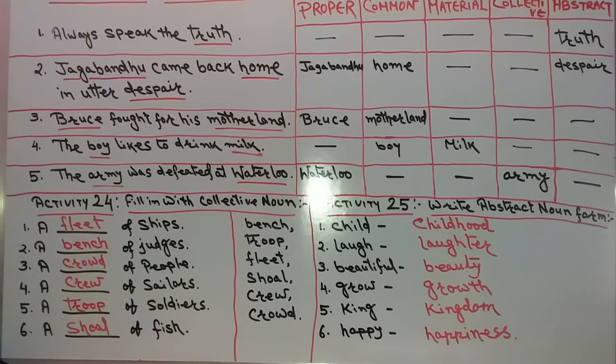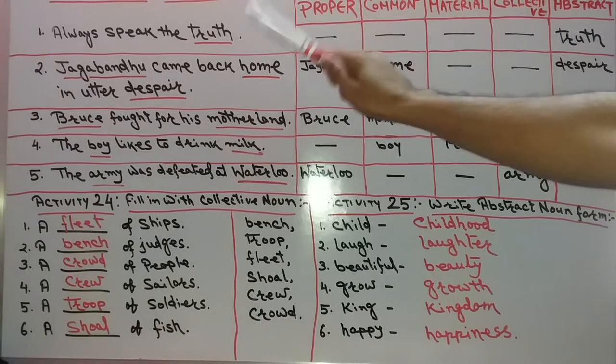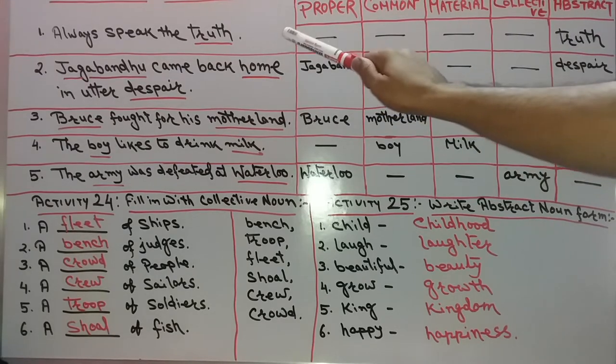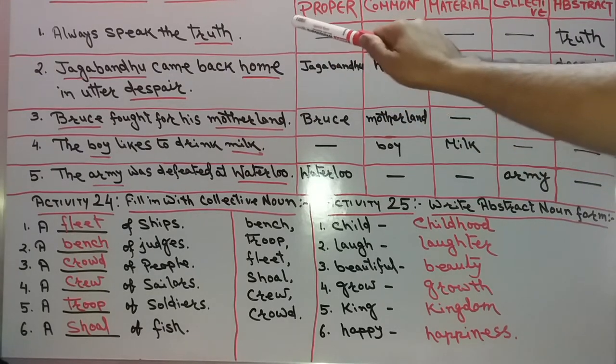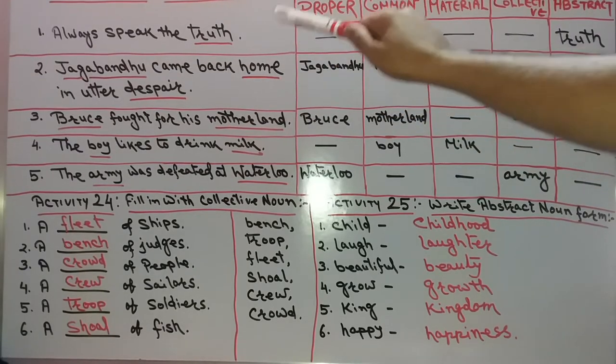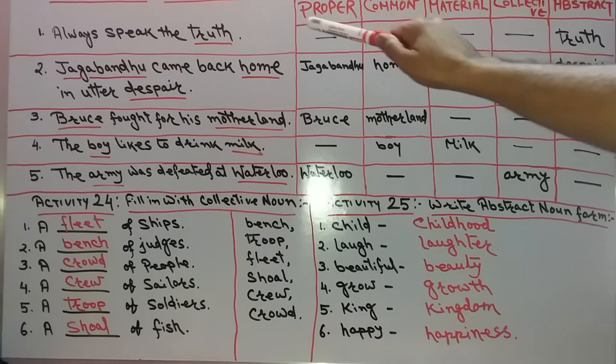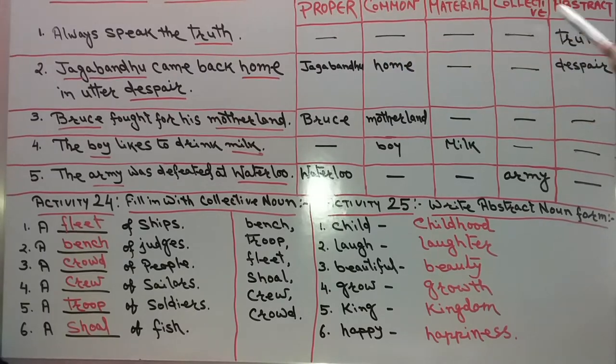The first sentence is: always speak the truth. Truth is a noun. Truth is an abstract noun. So we are putting it in the abstract noun column: truth.